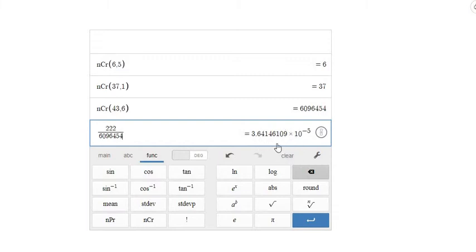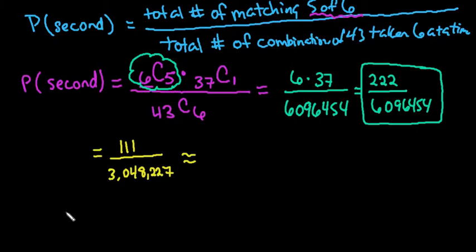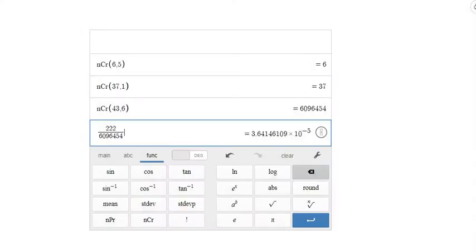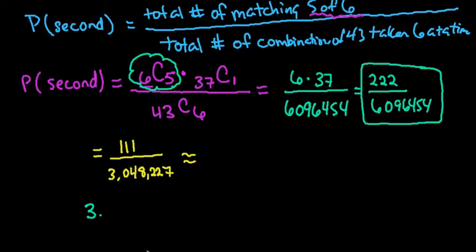Some calculators will give it to you in scientific notation this way. You may also have a calculator, like if you're using a Texas Instruments calculator. I know that a lot of times, instead of the E, they would write it as 3.6414 E negative 5. So this means scientific notation too.